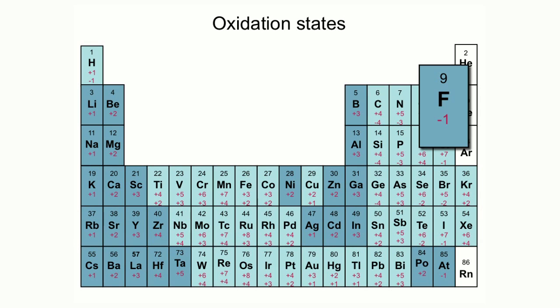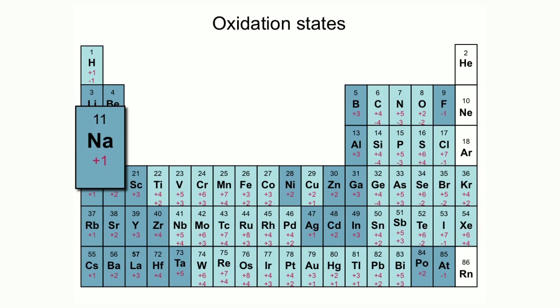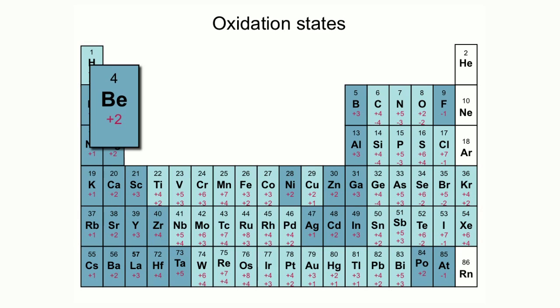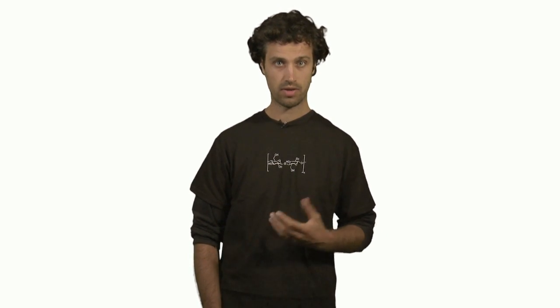Iron is an element that can have multiple oxidation states. The most common ones are plus three and plus two. Carbon, as we have seen, can also have multiple oxidation states — plus four and minus four are the most common ones. Even hydrogen can have multiple oxidation states: plus one and minus one. But how do we know what the oxidation state of a particular atom is when it is part of a compound? For instance, how do we know that the oxidation state of a carbon atom is plus four or whether it is minus four?